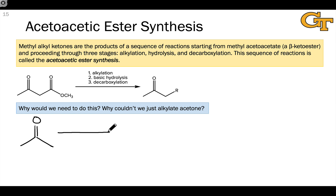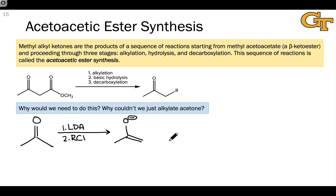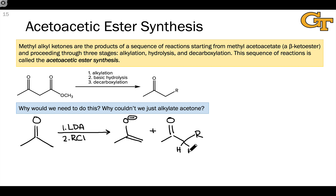Acetone and methyl ketones similarly present some problems. To illustrate this, let's think about what happens when we first treat with LDA and generate quantitatively — in other words, 100% — the enolate of acetone. In the second step, we introduce some alkyl chloride, RCl. This results in the formation of an alkylated product in which we've installed the R group on one of the carbons of acetone. But when the reaction is only partially over, we have that carbonyl compound in the presence of the acetone enolate, and that carbonyl compound has alpha hydrogens.